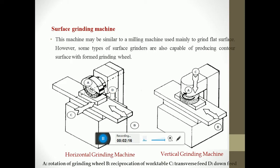The surface grinding machine may be similar to a milling machine, used mainly to grind flat surfaces. However, some types of surface grinders are also capable of producing contoured surfaces using the form of the grinding wheel. In the diagrams, A denotes the rotation of the grinding wheel, B denotes the reciprocating of the work table, C denotes the transverse feed, and D denotes the down feed. The two diagrams show a horizontal grinding machine and a vertical grinding machine. In the horizontal grinding machine, the work piece is moved in a transverse and longitudinal direction. In the vertical grinding machine, the work piece can be moved in the up and downward direction.